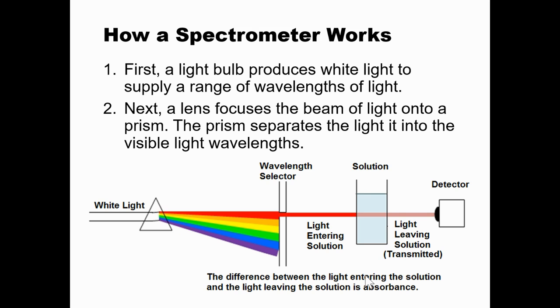The prism separates the light into the visible light wavelengths, and that's what we studied in the last lecture: red, orange, yellow, green, blue, indigo, and violet. The picture here doesn't have indigo and violet, but I digress.